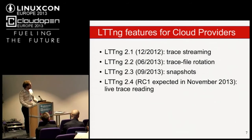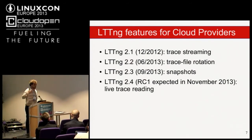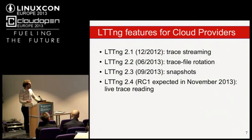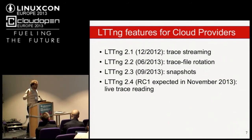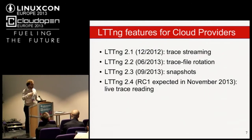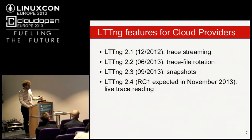Trace file rotation: in the default mode, when you create a trace, it runs until the destroy, continuously appending to a growing file. If you want to use tracing as a monitoring backend for long-running sessions, you don't want to append events indefinitely. Trace file rotation works like tcpdump — you have an on-disk ring buffer and reuse trace files once done. You can say you want to keep just the last five gigabytes of trace, and after that it starts overwriting the oldest events.